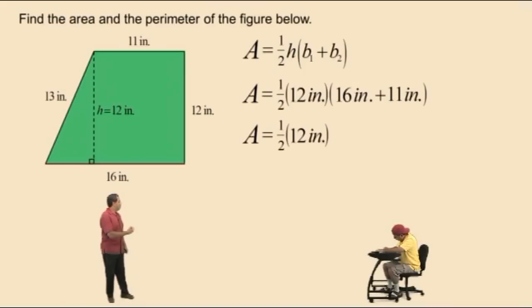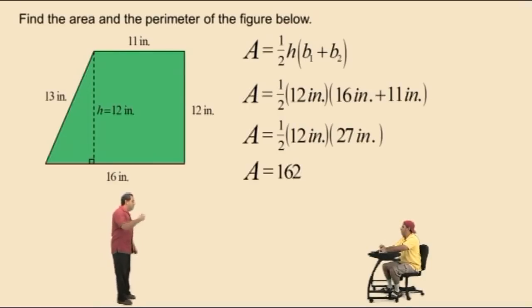Now let's bring down our work. 16 inches plus 11 inches is what, Charlie? 27 inches. Very nice. And now half of 12 is 6. And what's 6 times 27, Charlie? 162. Very nice there.